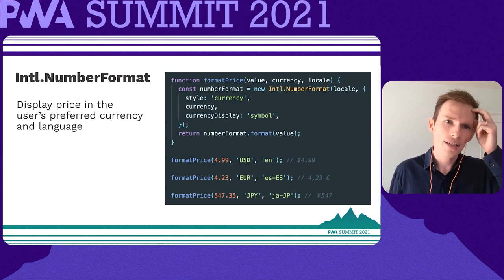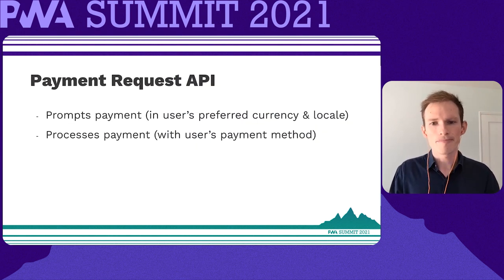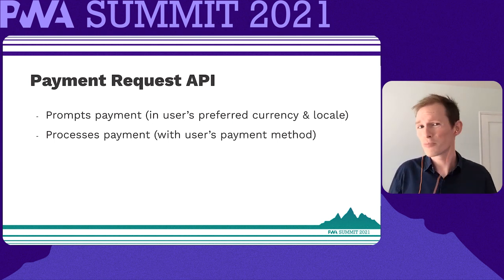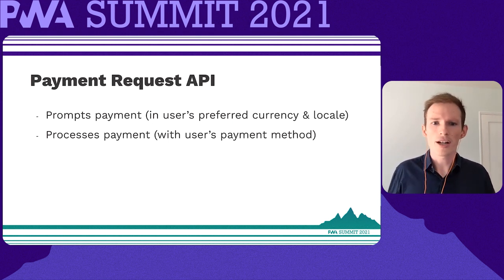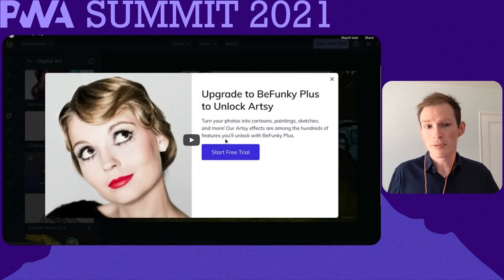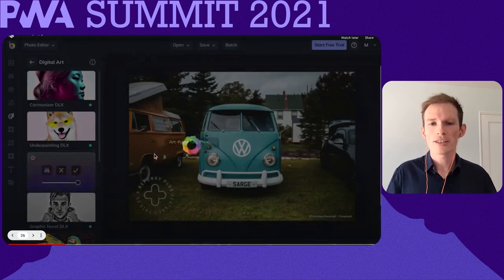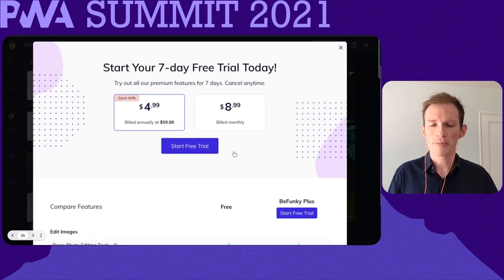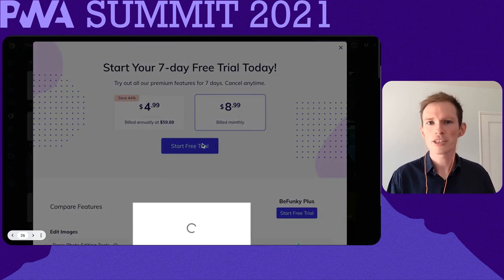The last API to get familiar with is the Payment Request API, which is already used extensively on many websites — if you've used Stripe for billing, it's built into that Stripe payment button. All it does is process a payment using a native dialogue in the user's preferred currency and locale. Here's a brief video of the Payment Request API in action on BeFunky.com: the user selects an effect, applies it to their photo, makes some tweaks, and then to save their photo with this effect they start a free trial and select the monthly plan. At the bottom, you see the Payment Request API open up this native dialogue prompting them to pay.